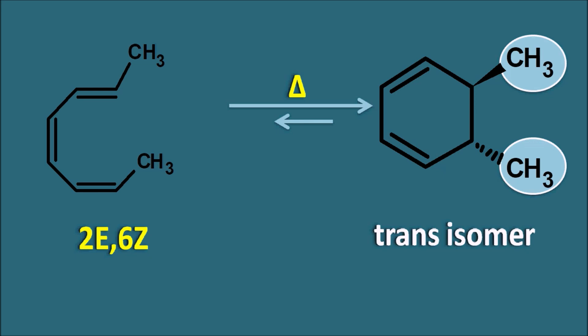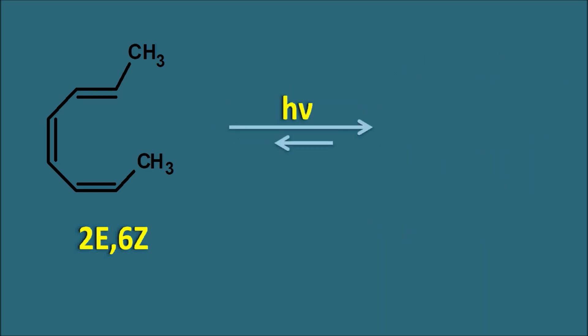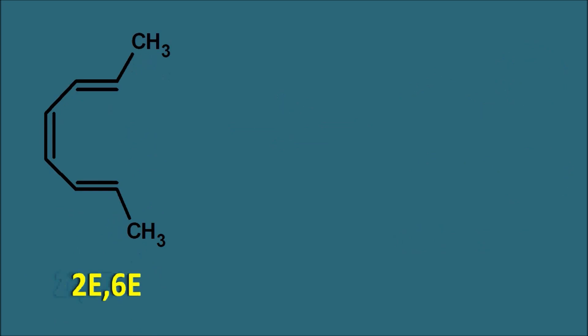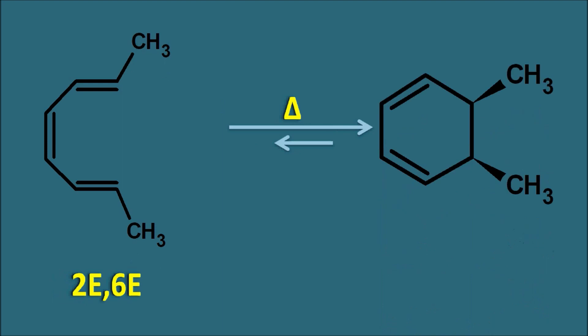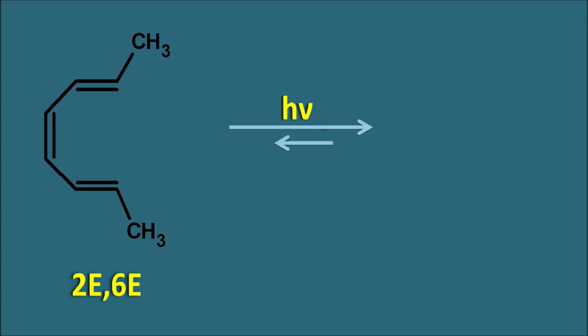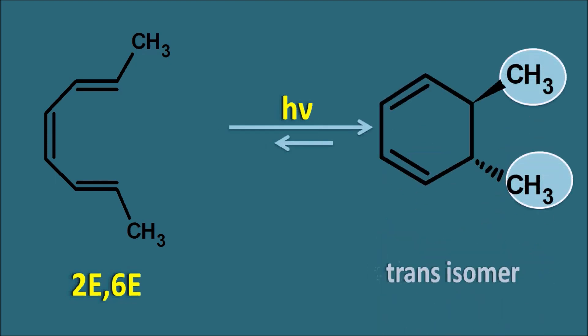With two double bonds in 2E4Z configuration, thermal energy gave the cis isomer, but here with three double bonds it gives the trans isomer. When 2E6Z reacts with photo energy, the methyl groups end up on the same side — giving the cis isomer. Similarly, taking 2E6E with thermal energy gives a product with methyl groups on the same side — this is the cis isomer. And the same 2E6E compound with photo energy gives a product with methyl groups on opposite sides — the trans isomer. In this way the compound with three pi bonds gives different types of products.